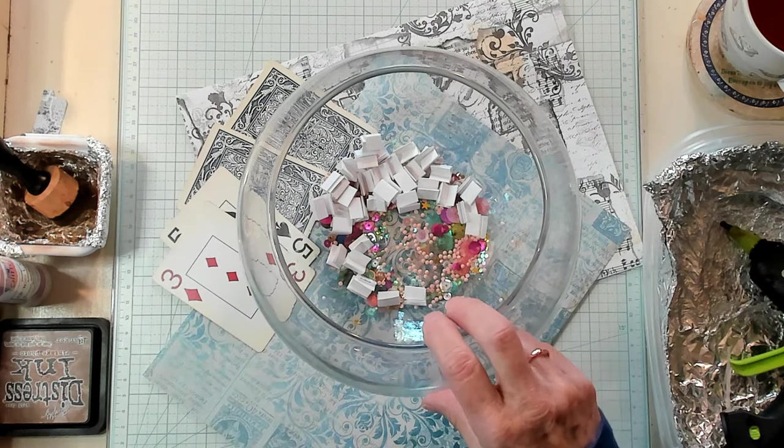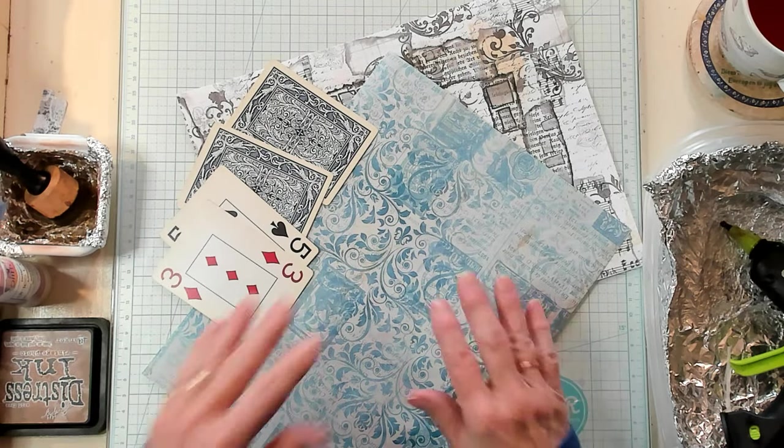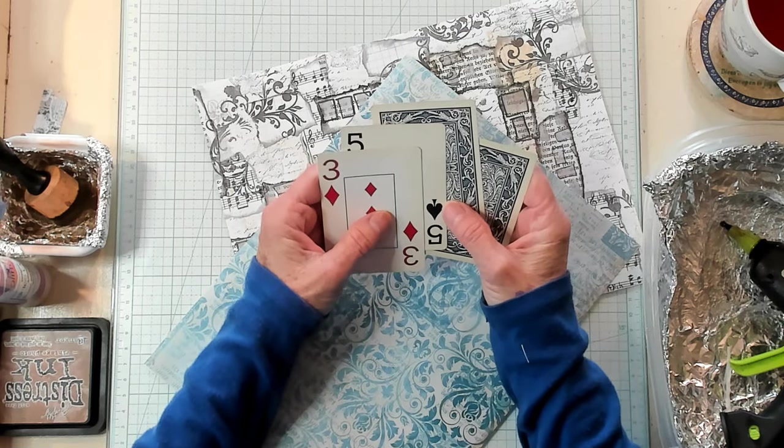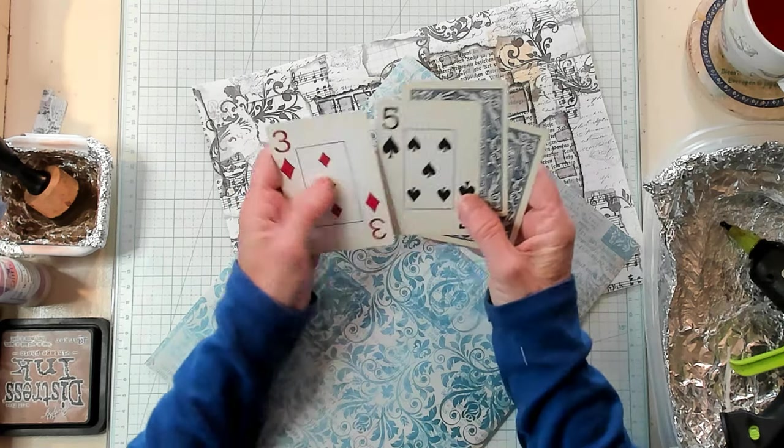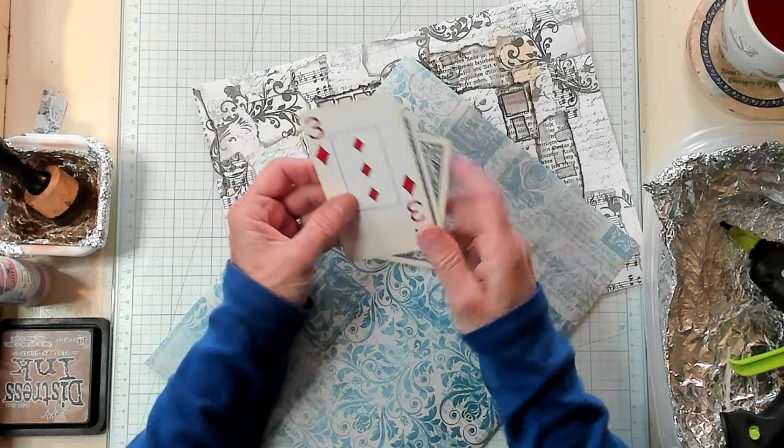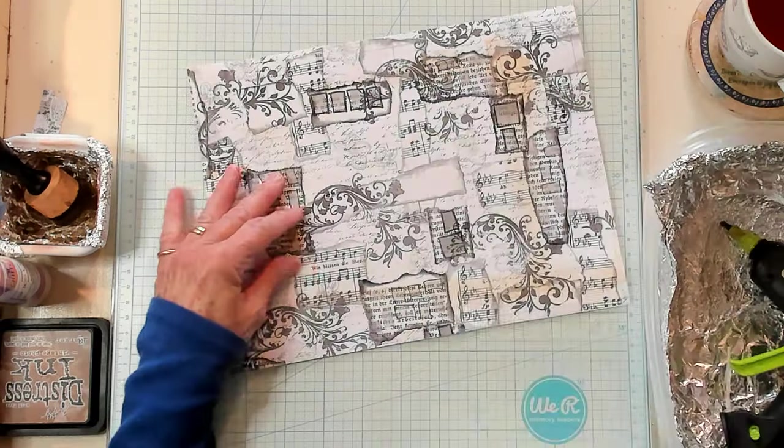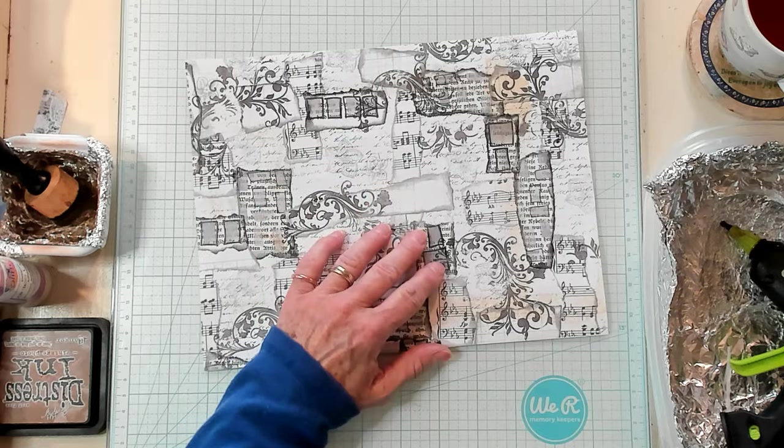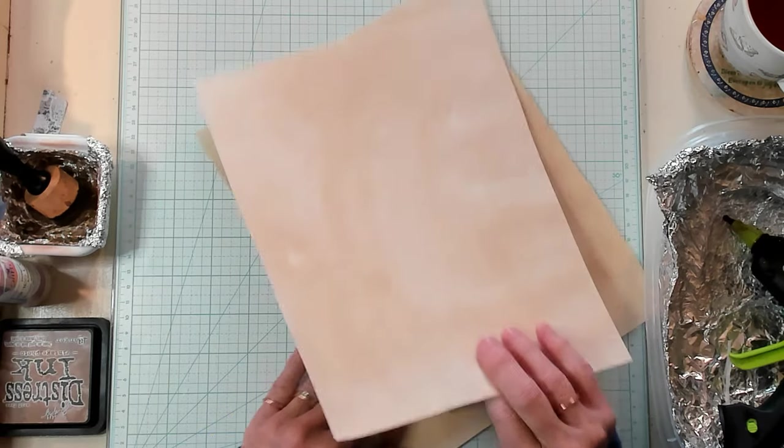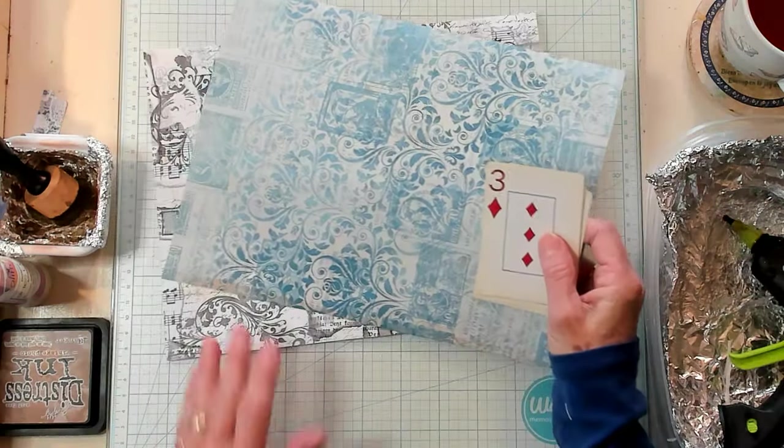I'm going to set this aside. I hope I have room right here on my desk. And we're going to make an accordion-style tag holder with some of our playing cards. So grab your playing cards, and let's get going.